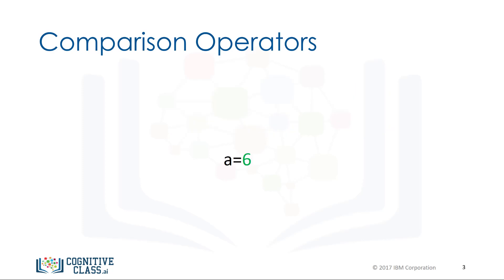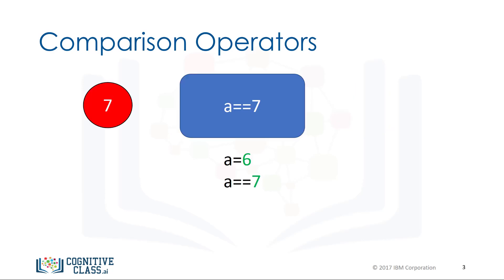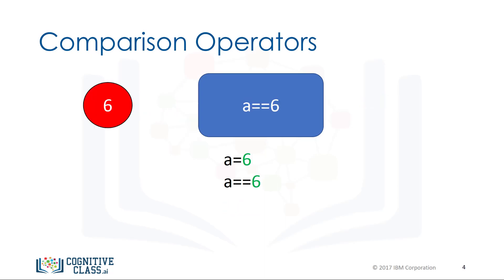Let's say we assign the value of a to 6. We can use the equality operator, denoted with two equal signs, to determine if two values are equal. In this case, if 7 is equal to 6 — as 6 is not equal to 7 — the result is false. If we performed an equality test for the value 6, the two values would be equal, and as a result we would get a true.